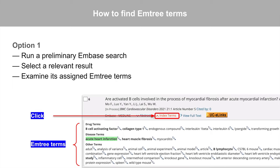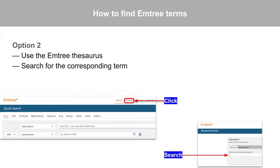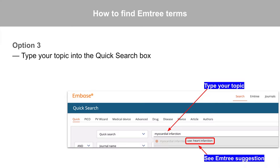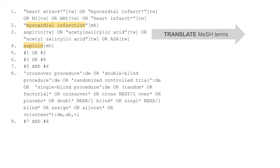Click the index terms tab in a search result and then review the mTree terms assigned to the publication. Option 2: Use the mTree thesaurus, available through the link in the upper right corner of Embase. Afterward, search on your topic to find the corresponding mTree term. Option 3: Type your topic into the quick search box. If applicable, Embase will automatically suggest an mTree term. Let's translate the MeSH terms in our strategy: myocardial infarction and aspirin.